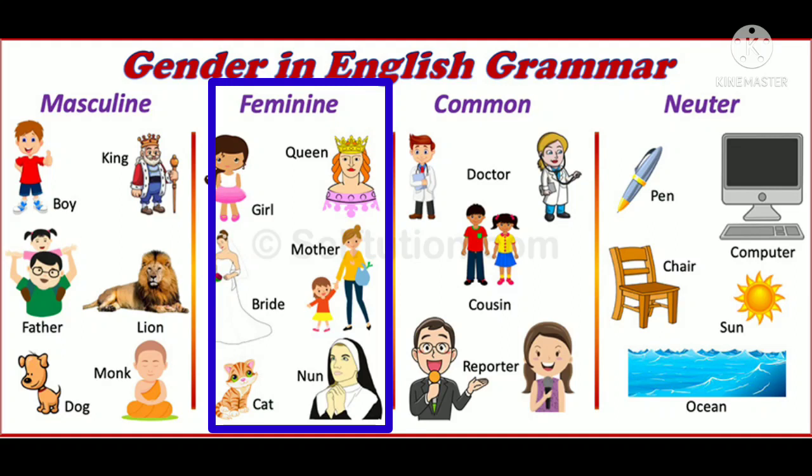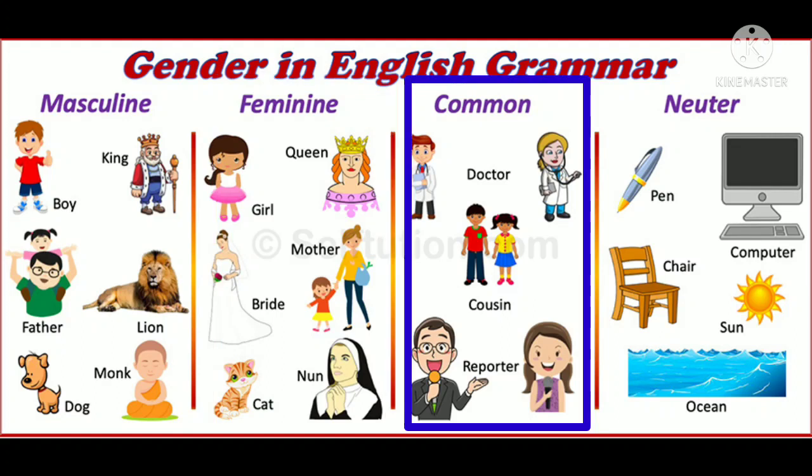Feminine gender: queen, girl, mother, bride, nun, and cat. Common gender: doctor, cousin, and reporter.